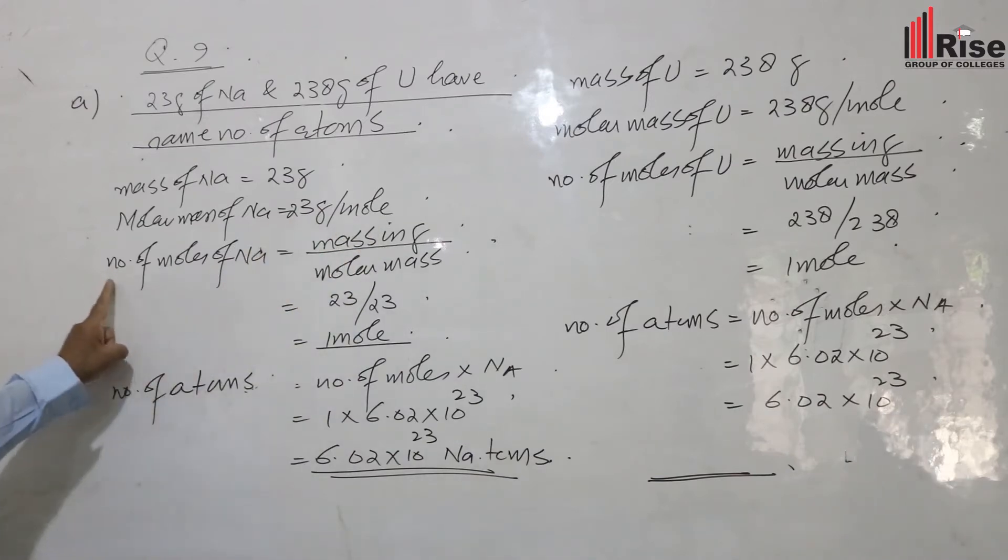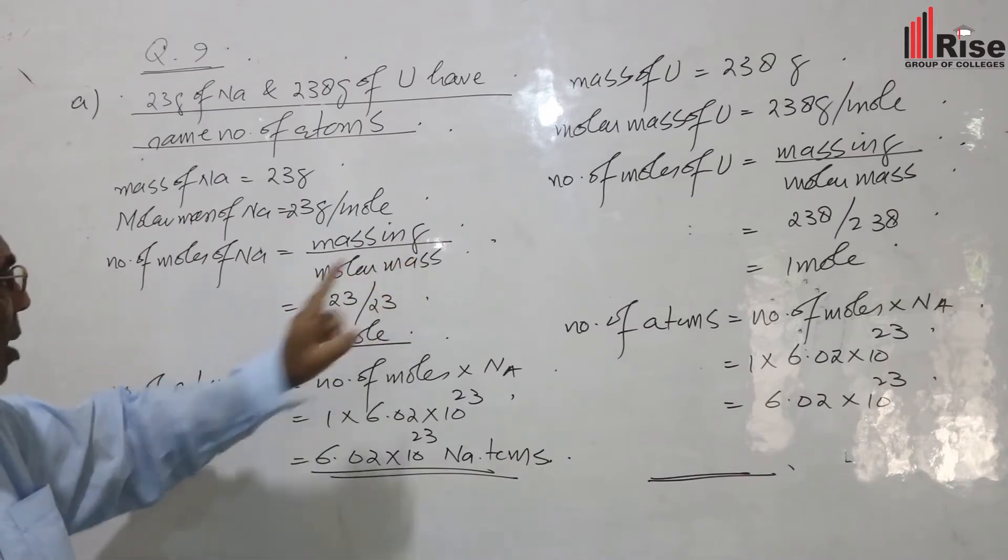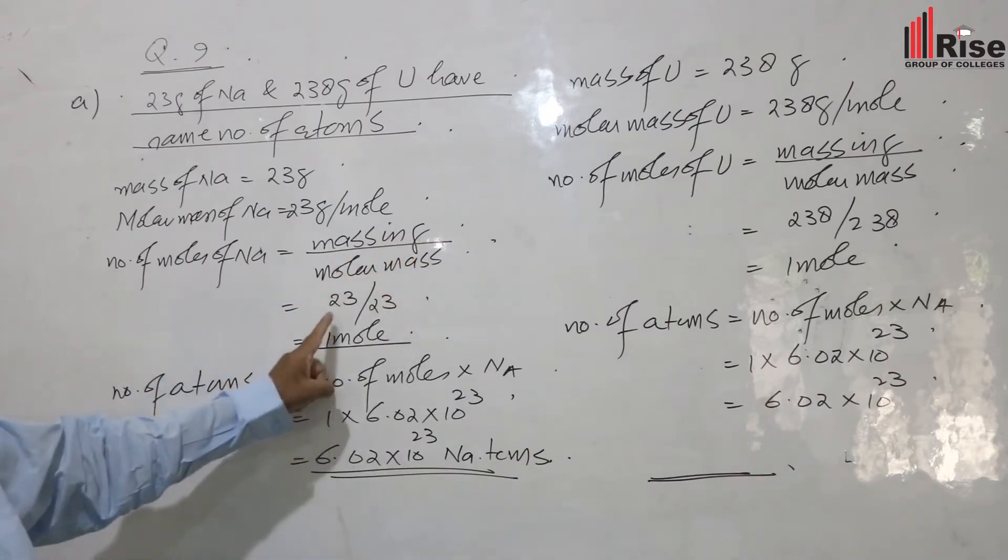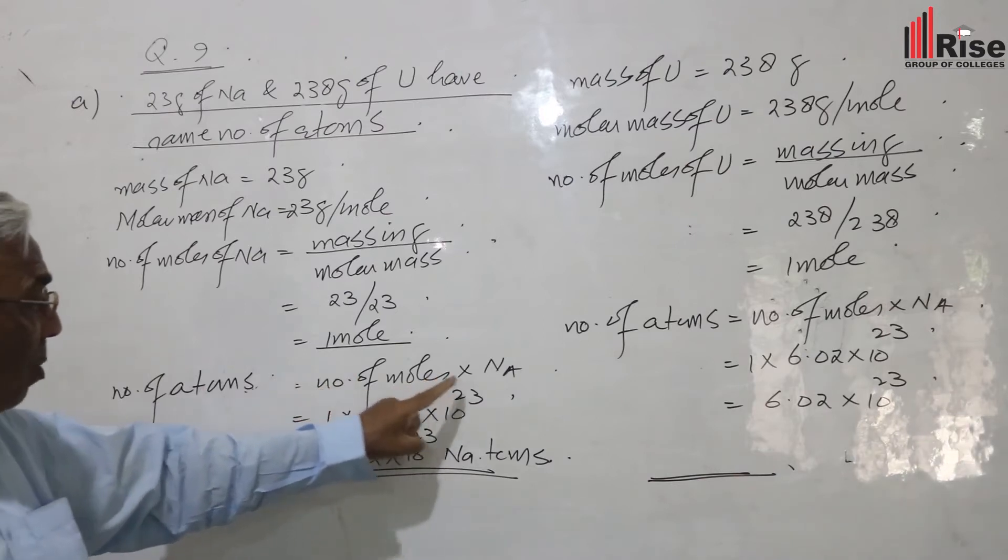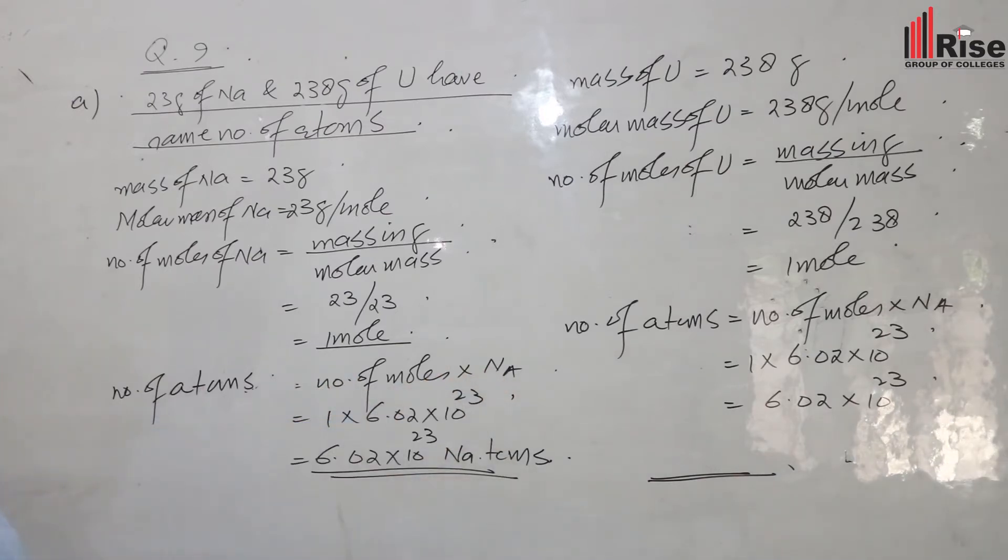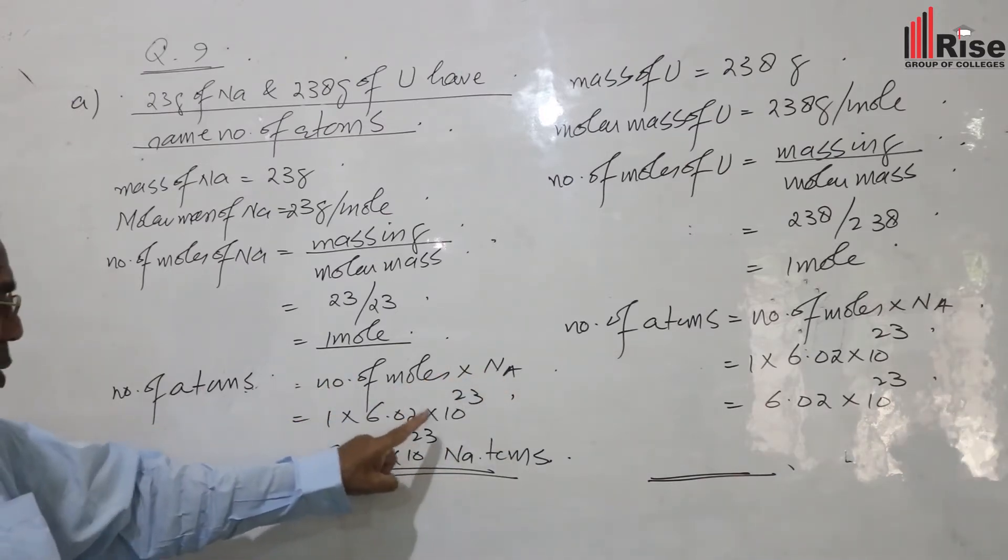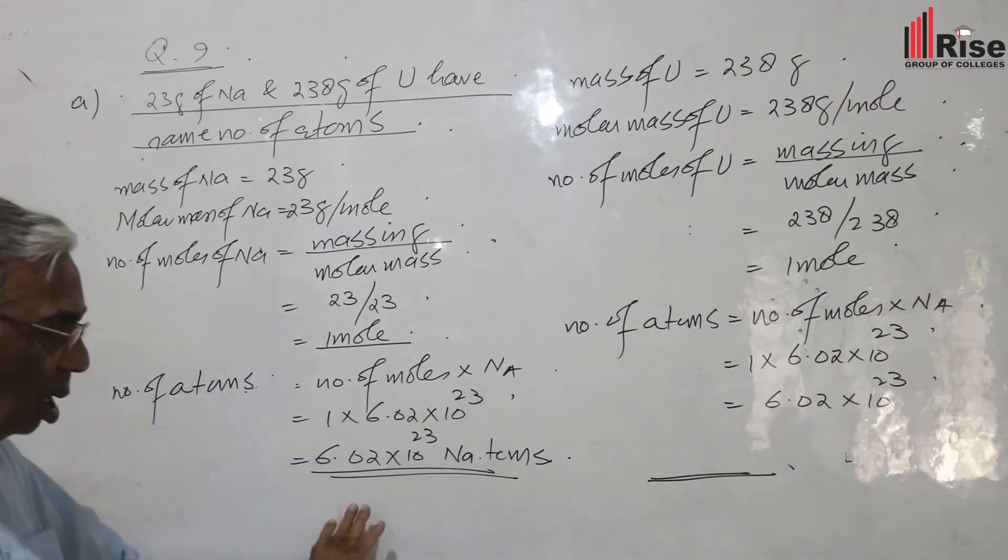Moles of sodium equal mass divided by molar mass: 23 divided by 23 equals one mole. Number of atoms equals number of moles multiplied by Avogadro's number: 1 into 6.02 into 10 raised to power 23 atoms.